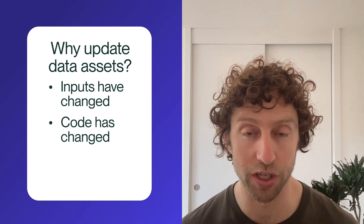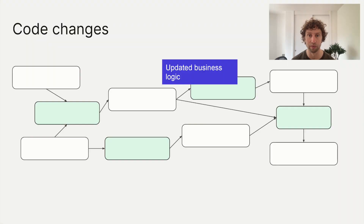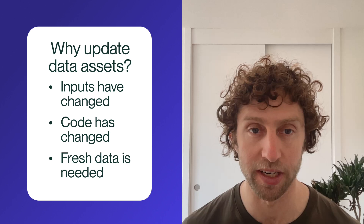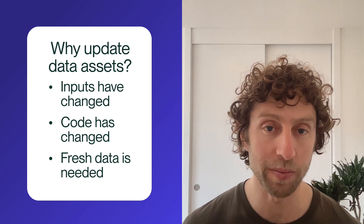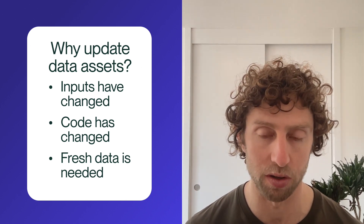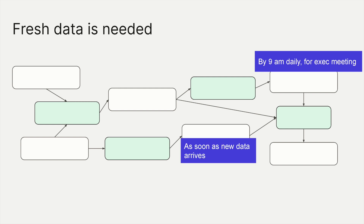The second factor is our code changes. Data is derived using code, and if we fix a bug or improve it in some way, then we usually want our data to reflect the updated code. The third and final reason is that fresh data is needed by the application or analyst using the data. If upstream data is changing constantly but we only look at our report once per day, it's often a waste of resources to update it constantly. We might need one asset updated daily, but want another to incorporate new upstream data as soon as it arrives.